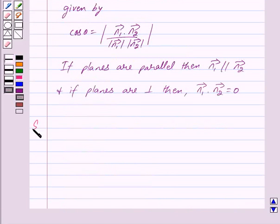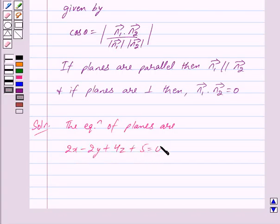Let us begin with the solution now. We are given the equation of the planes are 2x minus 2y plus 4z plus 5 equals 0 and 3x minus 3y plus 6z minus 1 equals 0.